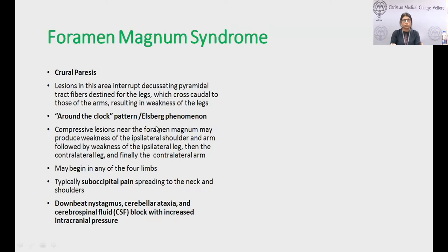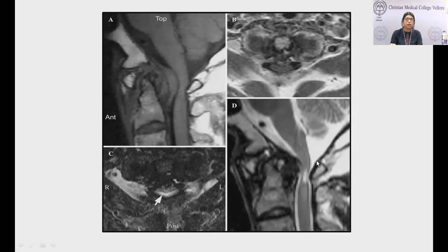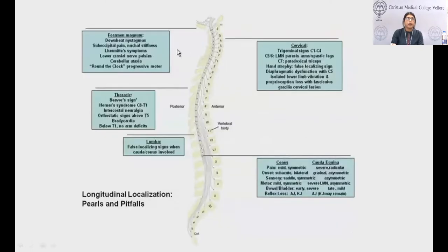This T1 section shows a lesion compressing the foramen magnum — the upper cervical cord is barely visible — and the T2 sagittal shows hyperintensity and cord compression at the upper cervical level. There are also signs which help localize the lesion to thoracic versus cervical levels.